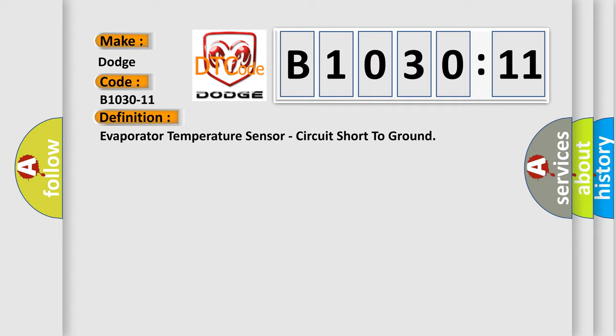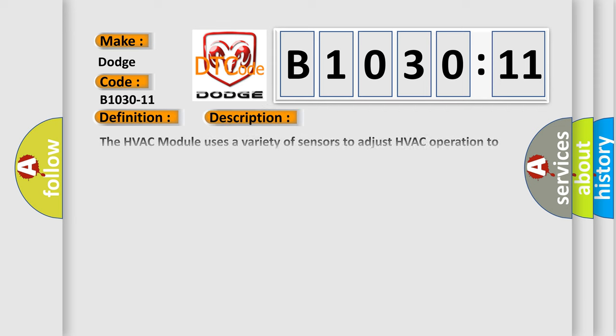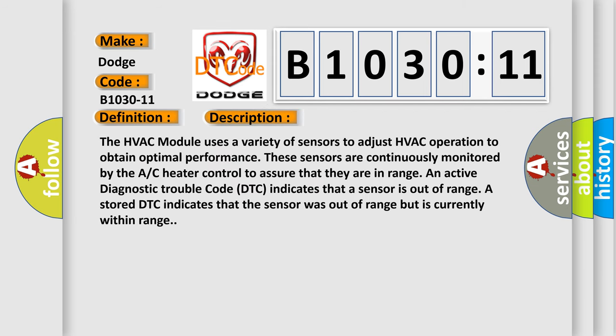And now this is a short description of this DTC code. The HVAC module uses a variety of sensors to adjust HVAC operation to obtain optimal performance. These sensors are continuously monitored by the AC heater control to assure that they are in range.